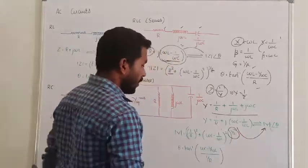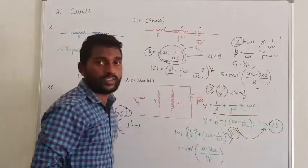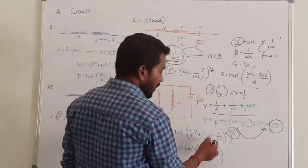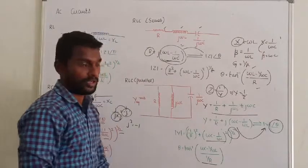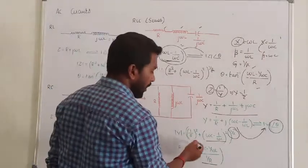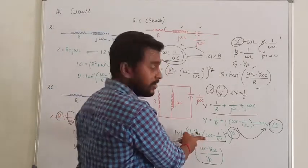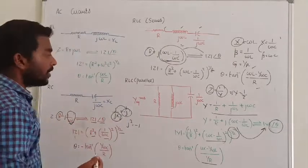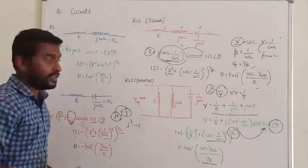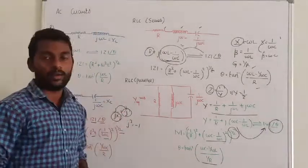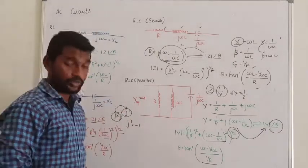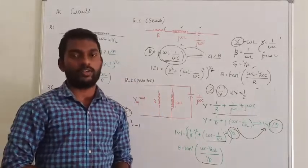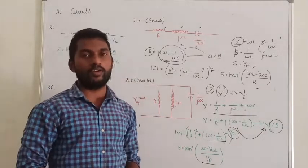The phase angle is found similarly: it is the arctangent of the imaginary part divided by the real part, where the real part is 1/R and the imaginary part is ωC minus 1/ωL. That is how we find the equivalent impedance and admittance in the case of series and parallel circuits. You can ask questions in the comment section. Thanks for watching.